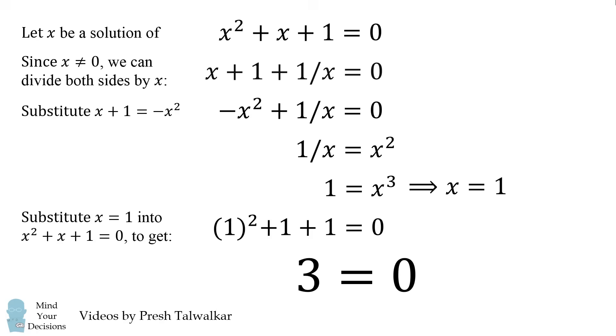This is clearly a nonsensical result, but every single step seemed to be correct. So where is the mistake in this false proof that 3 equals 0? Can you figure it out? Give this problem a try, and when you're ready, keep watching the video for the explanation.